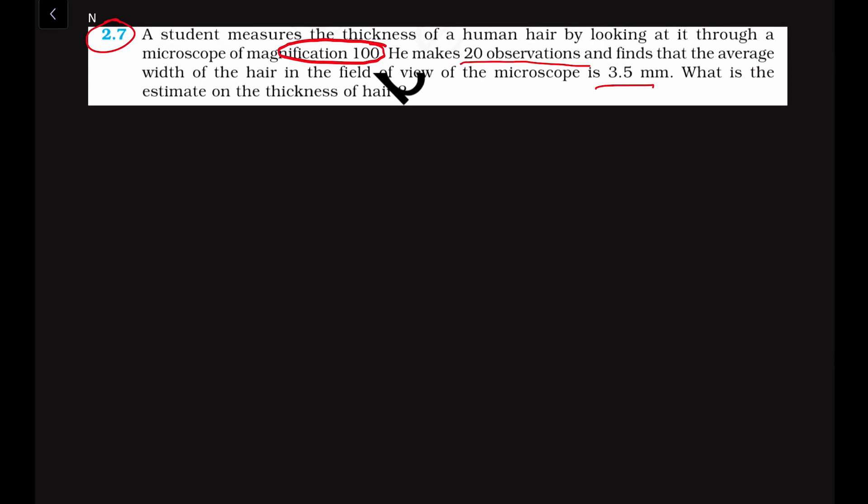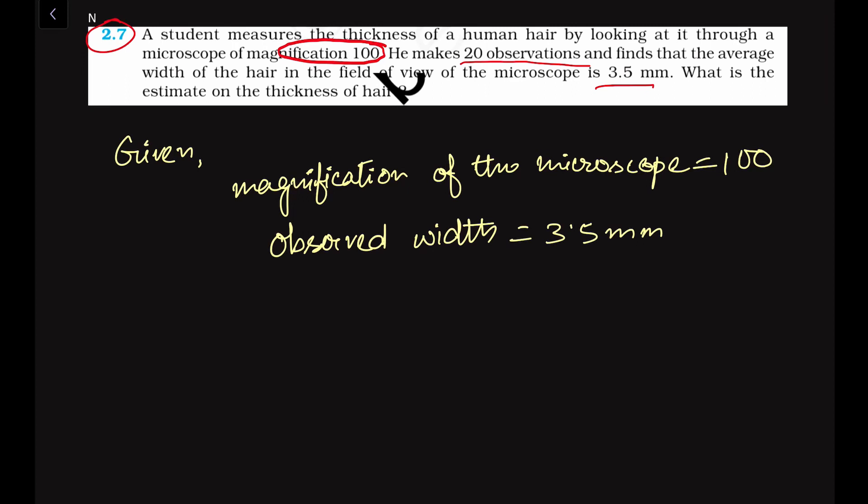First of all, let us write down the given parameters. We are given that this microscope can zoom or magnify an object up to 100 times. The observed width is also given, it is 3.5 millimeters. As per the question, we have to estimate the thickness of the human hair, that means we have to find out the real width.